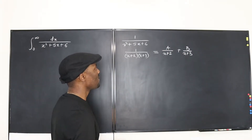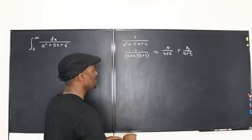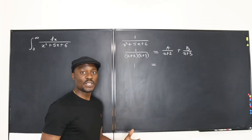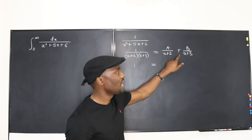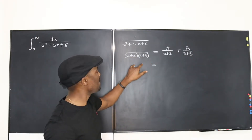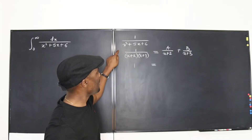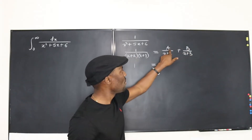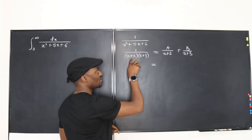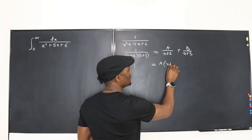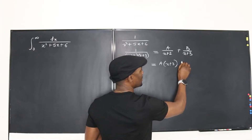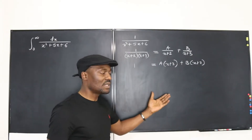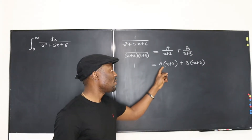How do we do that? If you've mastered partial fraction decomposition, you drop the numerator down: it will be equal to, after cross-multiplying by the denominator, A times (x+3) plus B times (x+2). The quick method is to choose a number that zeros out one of these terms.